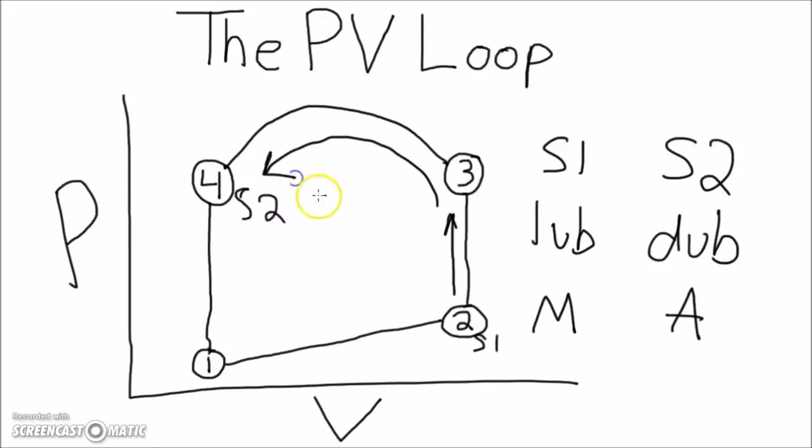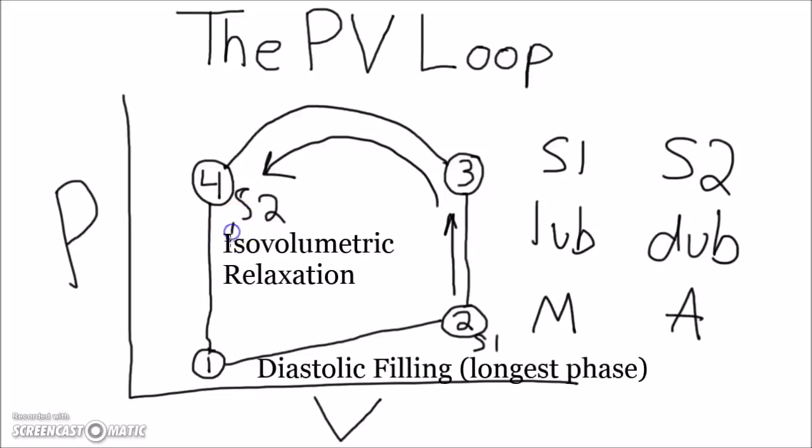The ventricle contracts and pushes blood out. Then S2 to the next S1 happens a little less quickly. This allows time for diastolic filling to occur, the longest phase of the heartbeat.